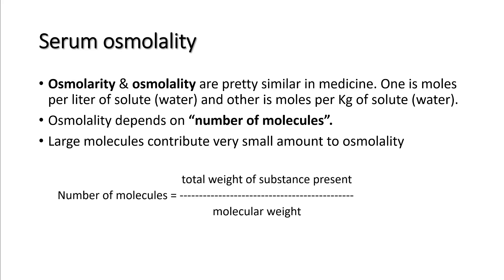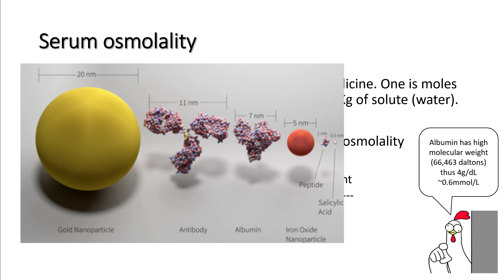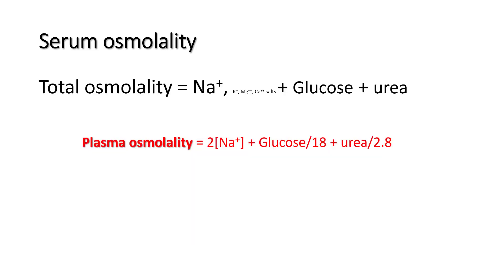Osmolality depends upon the number of molecules, and if the molecules are larger they will contribute much less to the osmolality. The higher the molecular weight, your number of molecules will be lower despite higher weight of the substance present. For example, albumin has a very high molecular weight of around 66,000 Daltons, and even though it's present at 4 g/dL it only contributes 0.6 millimole per liter. Just for comparison, this is the size of the albumin molecule while the sodium molecule is possibly similar to one of these red dots here.